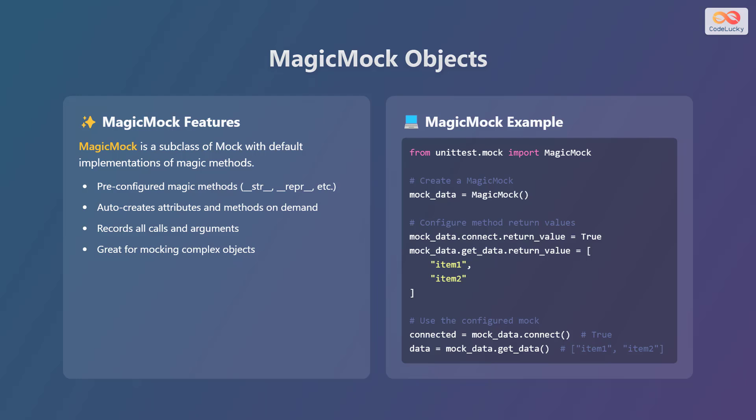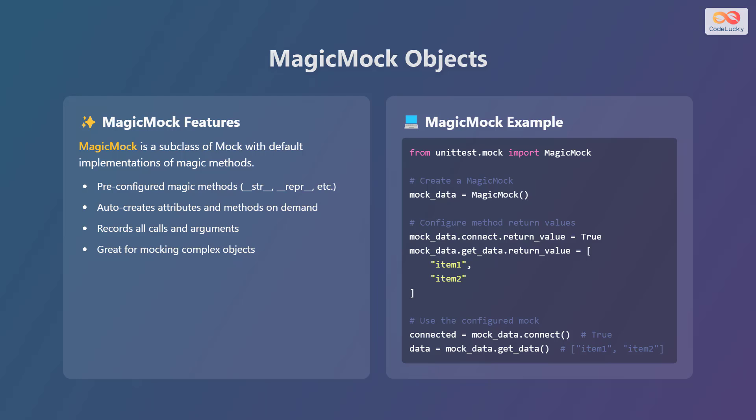Let's explore MagicMock objects. MagicMock is a subclass of Mock with default implementations of magic methods. It has pre-configured magic methods like __str__, __repr__, and so on. It auto-creates attributes and methods on demand, records all calls and arguments, and is great for mocking complex objects. To create a MagicMock, first import MagicMock from unittest.mock, then instantiate the MagicMock class. Configure method return values using the .return_value attribute, and then use the configured mock in your tests.